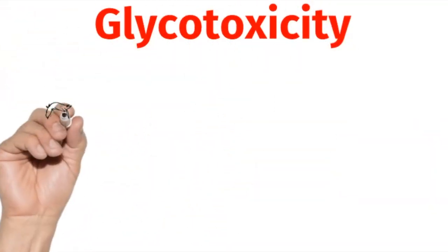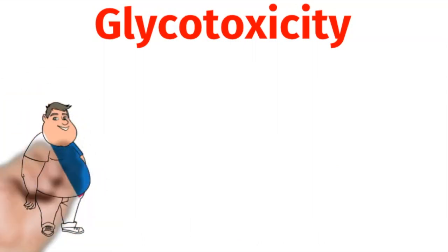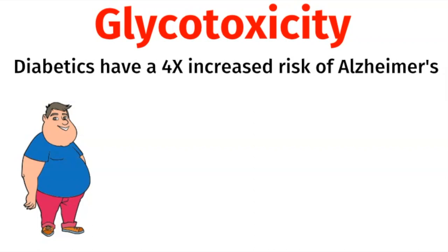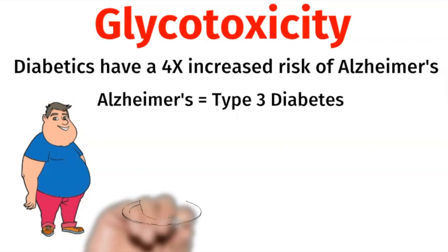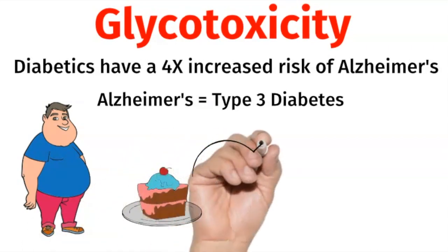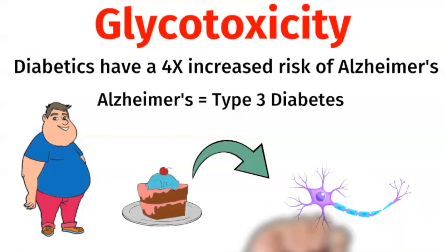Next, let's talk about glycotoxicity. High blood sugar is really toxic to the brain, which is why diabetics have a four-fold increased risk of Alzheimer's. This is why they sometimes refer to Alzheimer's as type 3 diabetes. High blood sugar causes neurons in the brain to produce beta-amyloid plaques as a protective defense mechanism.